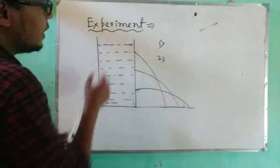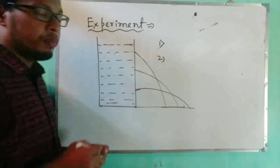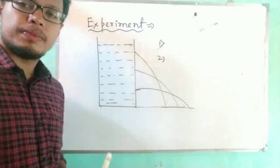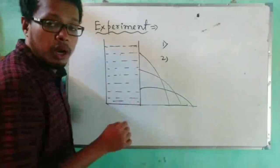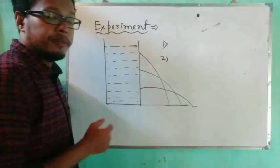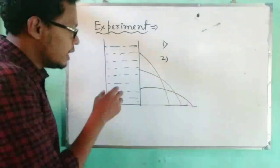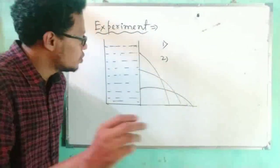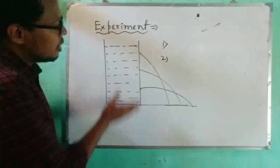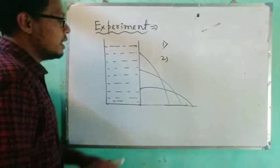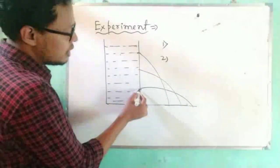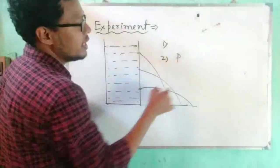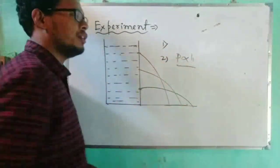The thrust per unit area gives the pressure at that particular point. In the third observation, we notice that as the depth of the hole increases, the distance the water travels (the throw) also increases. We conclude that pressure increases with depth — that is, pressure is directly proportional to h, where h is the depth of the water.